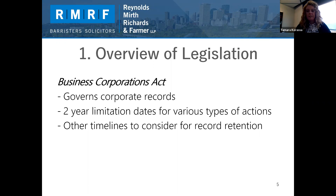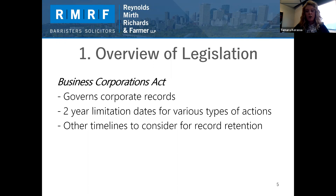The Business Corporations Act also provides several other timelines to consider for the retention of records. Corporations are required to keep information relating to their shareholders for at least seven years after the shareholder ceases to be a shareholder. Additionally, a corporation is not required to produce cancelled security certificates after six years after the date of cancellation, which implies that the corporation would need to produce a cancelled security certificate within that six-year period.